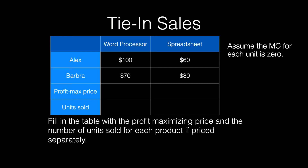The table shows the consumers' reservation prices. Alex is willing to pay $100 for the word processing software and Barbara $70. If the firm charges $100, only Alex will buy. If the firm charges $70, then both Alex and Barbara will buy the word processing software and the firm will earn $140. So $70 is the profit-maximizing price for the word processing software.